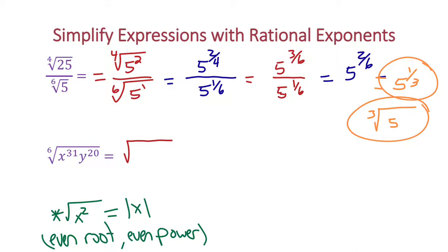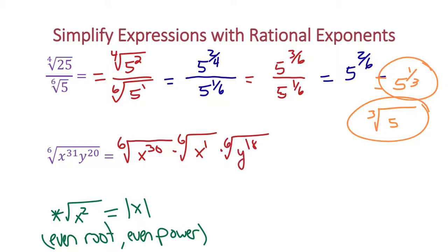So if we split this one apart using radical form: I'm going to have the 6th root of x to the 30th, and then the 6th root of x to the 1st — I split 31 into 30 and 1 because 30 is divisible by 6. Then split the y part: the 6th root of y to the 18th and the 6th root of y squared. Don't forget to keep that 6th root. We have even root and even power, so the answer must include absolute values. This gives absolute value of x to the 5th.